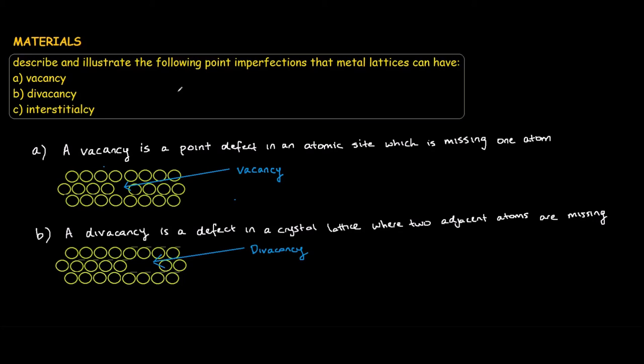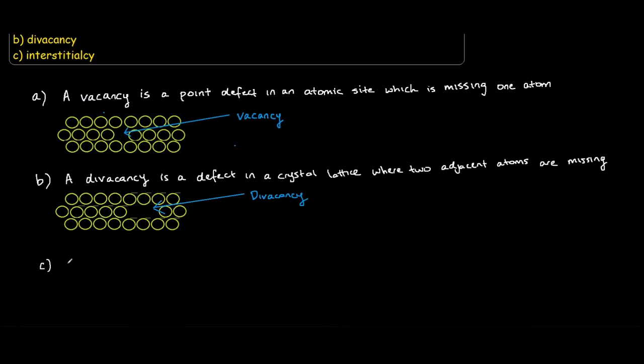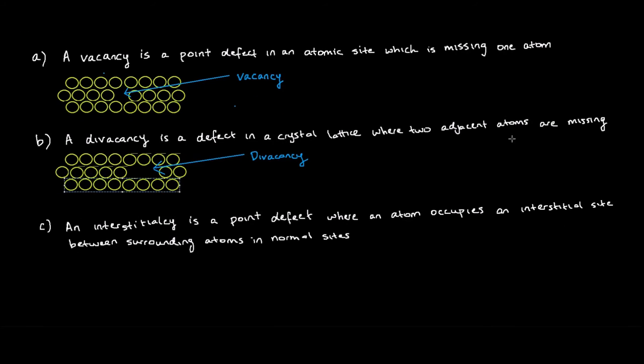And lastly, we have an interstitialcy, which is just a point defect where an atom occupies an interstitial site between surrounding atoms in normal sites. So I'll quickly write this down for you. And I'll quickly draw what an interstitial site looks like.